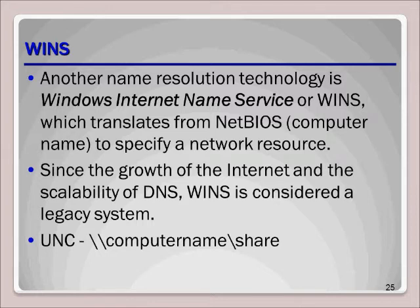In a UNC path, the two backslashes indicate that you are accessing a specific computer. The computer name represents the actual host or computer name, and the backslash share represents a shared folder on that computer that you are accessing. When accessing a UNC, the computer name can be resolved to an IP address through WINS or DNS.